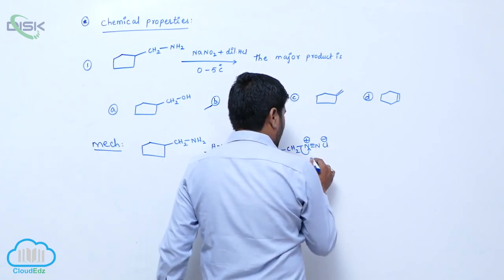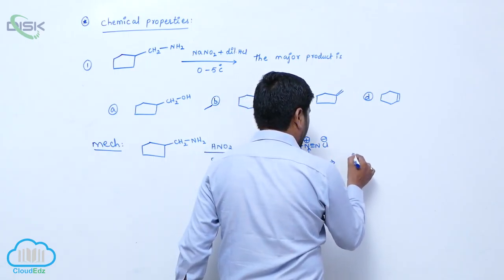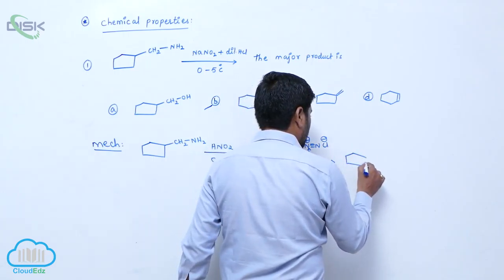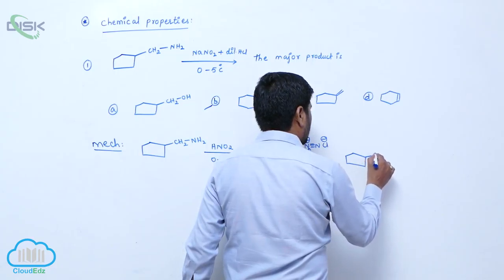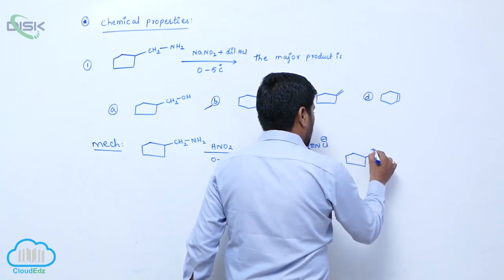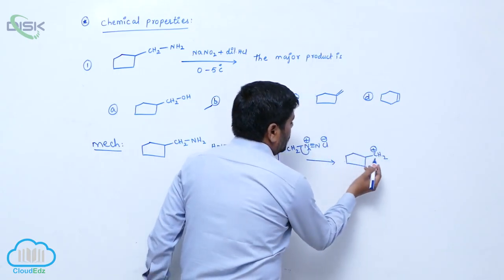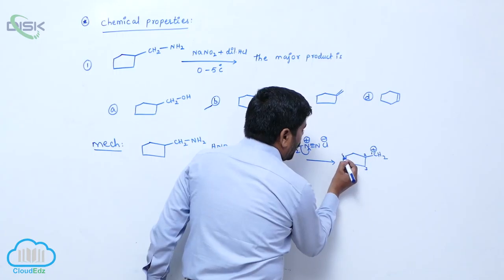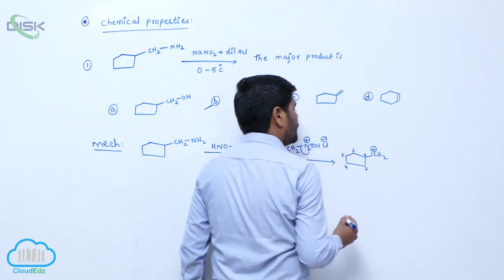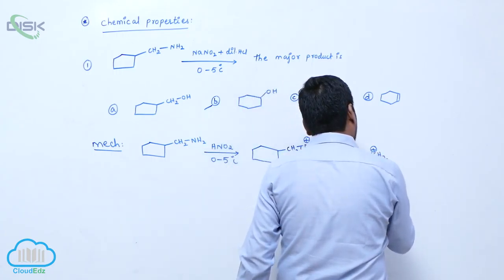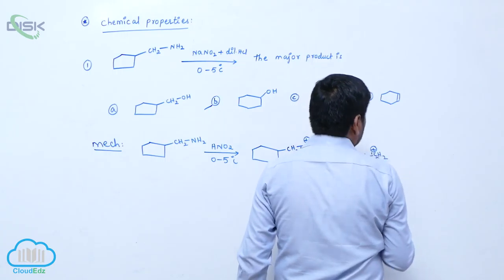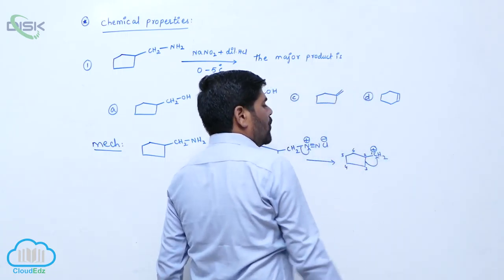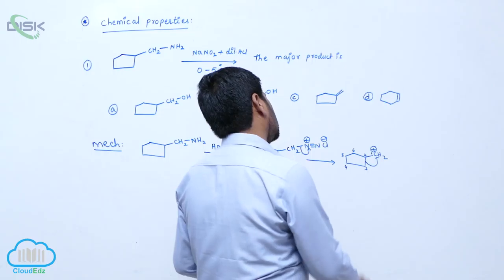Loss of N2 molecule takes place to form a 1 degree carbocation. Now 1, 2, 3, 4, 5, 6. It is a 1 degree carbocation. Ring stability is less, carbocation stability is also less. So immediately,